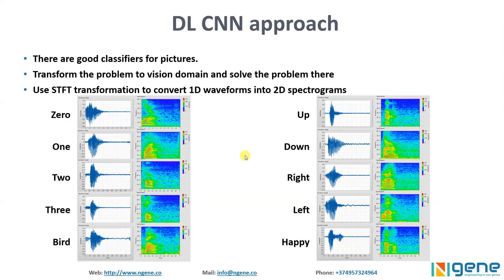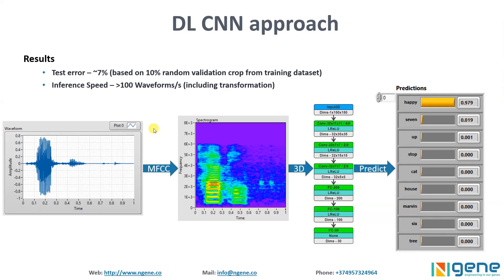If we look at the waveforms themselves, it would be very hard to identify patterns or features in order to identify the words. But if we look at their spectrograms, we can see that each word has some specific features and patterns. We can use this information to build deep learning-based algorithms for classification. Basically, we convert our one-dimensional waveform data into a two-dimensional spectrogram, which can be considered as an image.